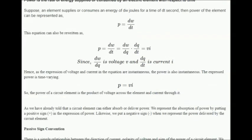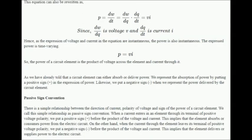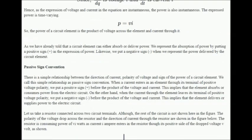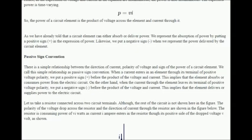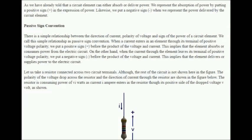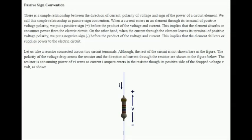The circuit element can either absorb or deliver power. We represent the absorption of power by putting a positive sign in the expression of power. Likewise, we put a negative sign when we represent the power delivered by the circuit element. Passive sign convention: there is a simple relationship between the direction of current, polarity of voltage, and sign of the power of a circuit element. When a current enters an element through its terminal of positive voltage polarity, we put a positive sign before the product of the voltage and current, implying the element absorbs or consumes power. When the current leaves through the positive terminal, we put a negative sign, implying the element delivers or supplies power.